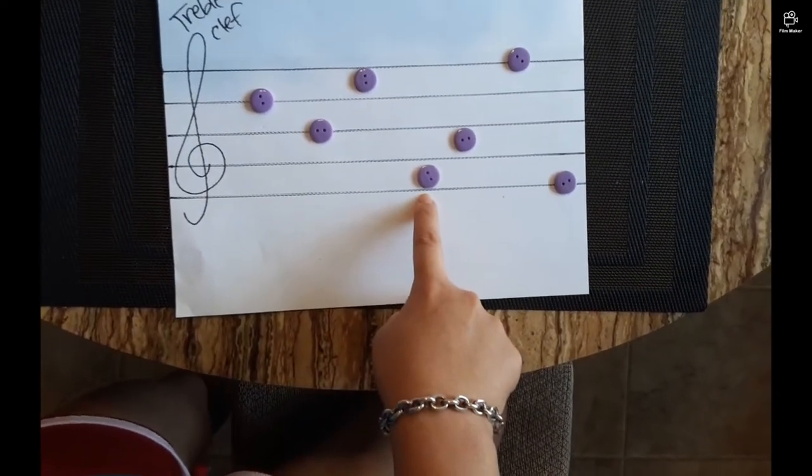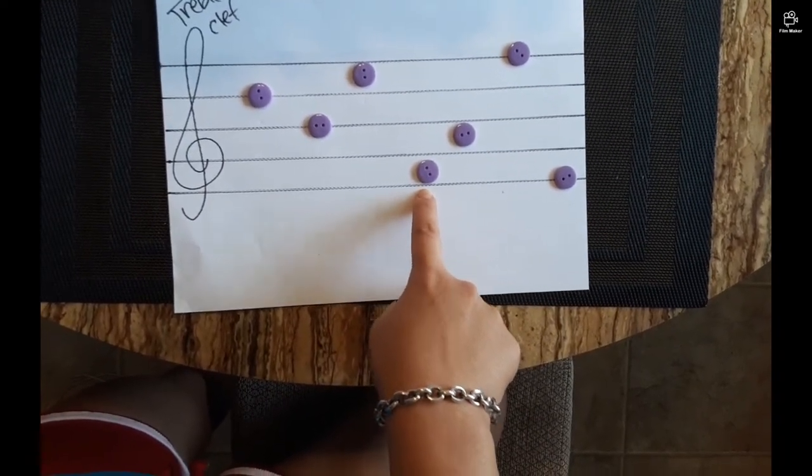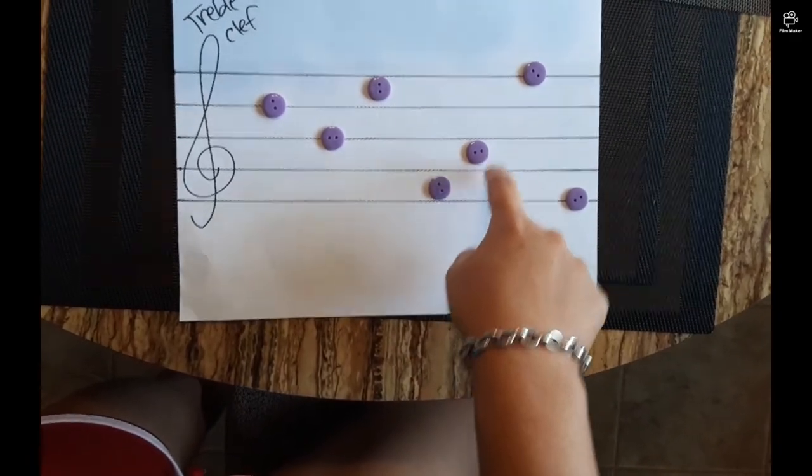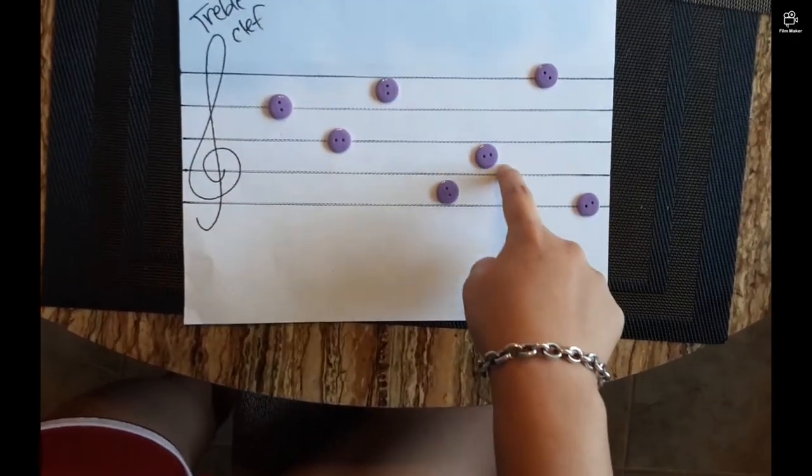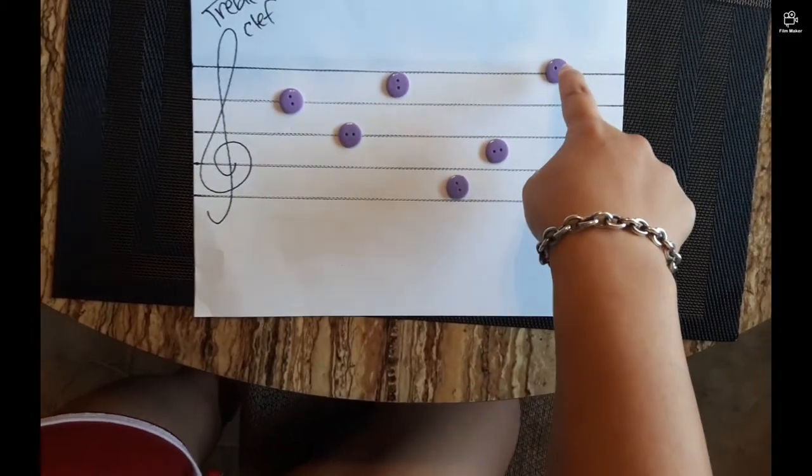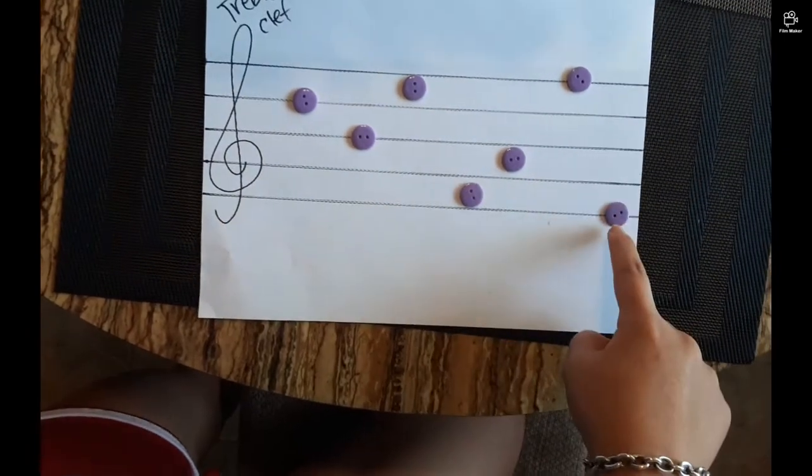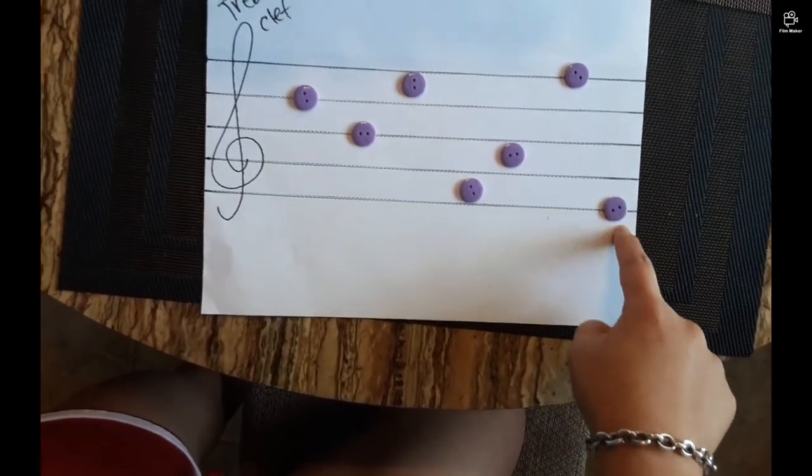Another space note. So we have to spell out face. F. That's an F. Another space note. F-A-C-E. So that's A. Line note. Every good boy does fine. That's F. Bottom line note. Every. So that's E.